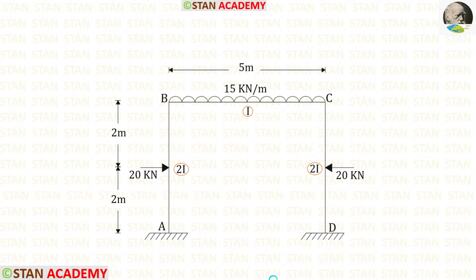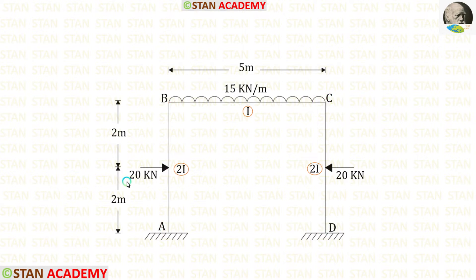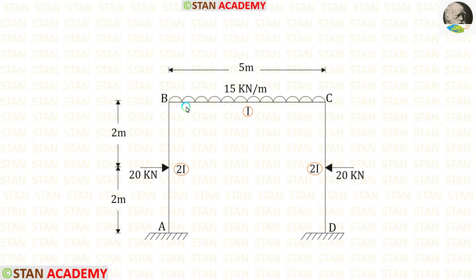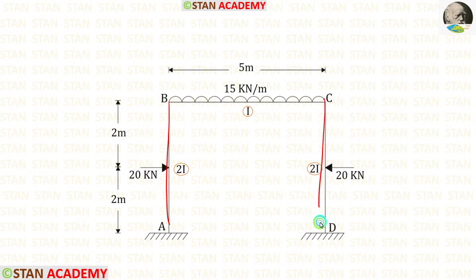In this frame there are two columns: column AB and column CD. There is also a beam BC. In column AB, there is a point load of 20 kilo Newton acting towards the right side. In column CD, there is a point load of 20 kilo Newton acting towards the left side. Both point loads are acting at the center. In beam BC, we have a uniformly distributed load of 15 kilo Newton per meter acting for the full span. The length of the beam is 5 meters and the height of the columns is 4 meters. The moment of inertia for the columns is 2I and for the beam it is I.